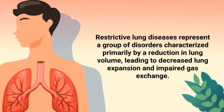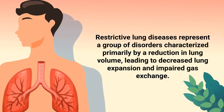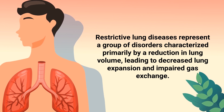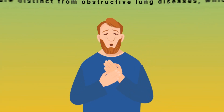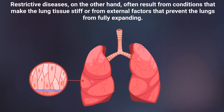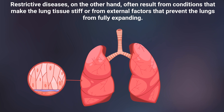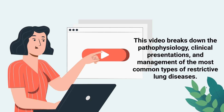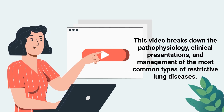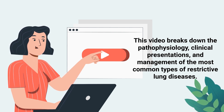Restrictive lung diseases represent a group of disorders characterized primarily by a reduction in lung volume, leading to decreased lung expansion and impaired gas exchange. These are distinct from obstructive lung diseases which limit the outflow of air. Restrictive diseases often result from conditions that make the lung tissue stiff or from external factors that prevent the lungs from fully expanding. This video breaks down the pathophysiology, clinical presentations, and management of the most common types of restrictive lung diseases.